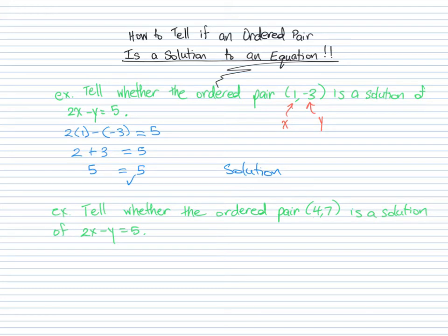So our x coordinate is the 4 - the first coordinate is our x coordinate, and the second coordinate 7 is our y coordinate. And we go ahead and plug those into that equation. We have 2 times x, so 2 times 4, minus y, and y is 7, is equal to 5. And so we have to test if that's true.